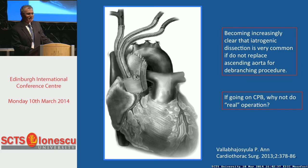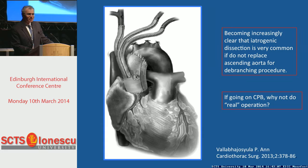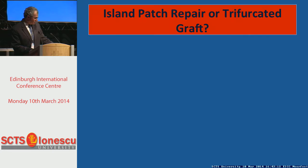I'd like to spend a moment thinking about the zone zero hybrid procedures. It's been recognized that if you instrument the ascending aorta for construction of this extra-anatomical bypass graft, you face a pretty high risk of aortic dissection. The recommendation is now to replace the ascending aorta — but if you have to go on bypass to do that, why don't you just do the real operation and be done with it?